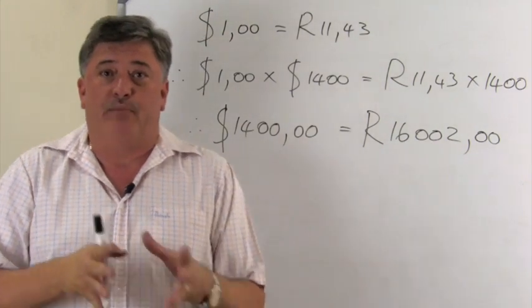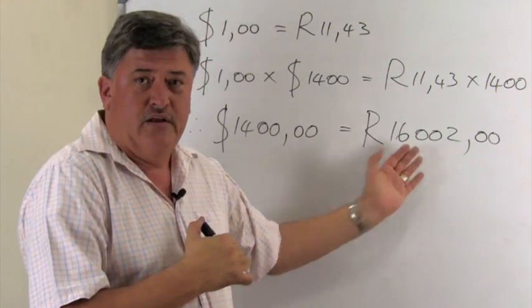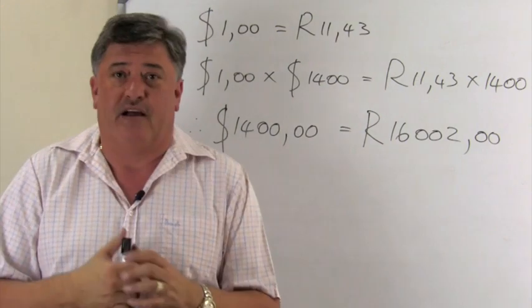So when he pays for this equipment, in Rand he will pay R16,002. In dollars, it will cost him $1,400.